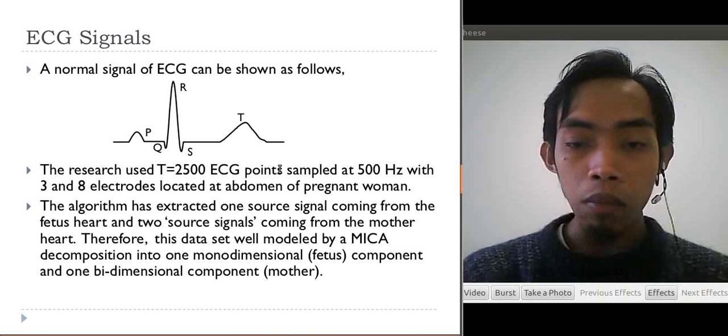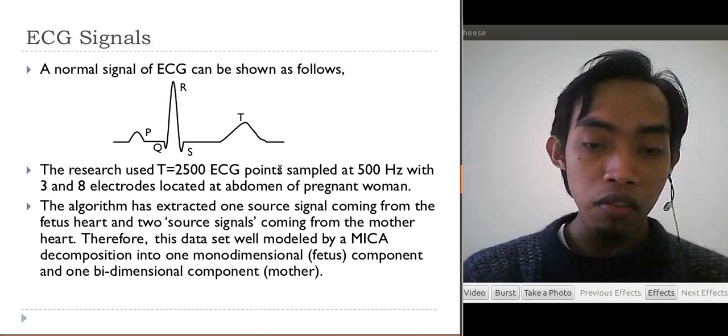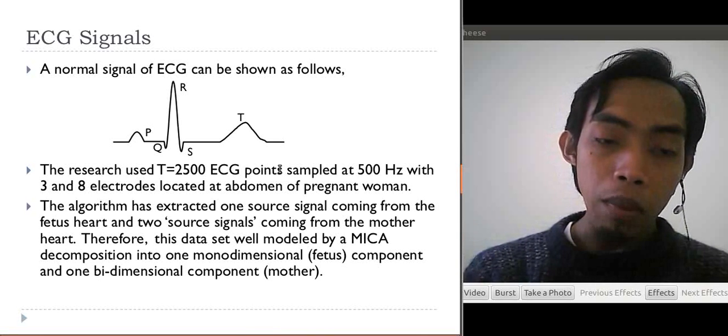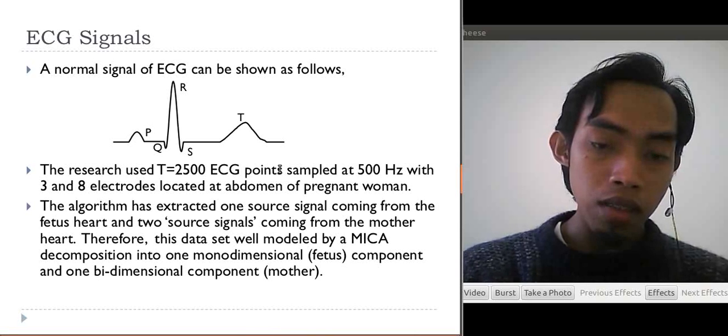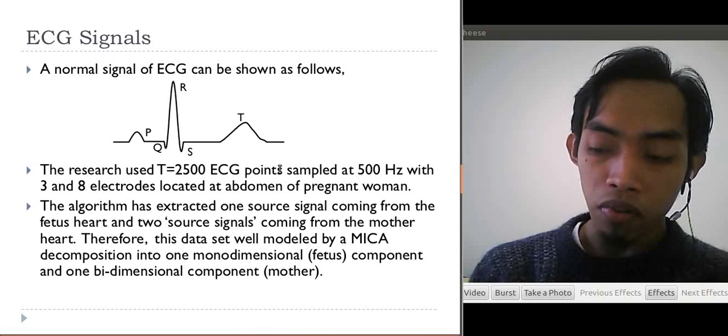In this research, it used 2,500 ECG sample points at 500 Hz with 3 and 8 electrodes or sensors located at abdomen of pregnant women. The algorithm has extracted 1 source signal coming from fetus heart and 2 source signals from the mother heart. Therefore, this data set will be modeled by MICA decomposition into 1 monodimensional fetal component and 1 bidimensional component from mother. The goal is to extract signals from maternal and from the fetus.